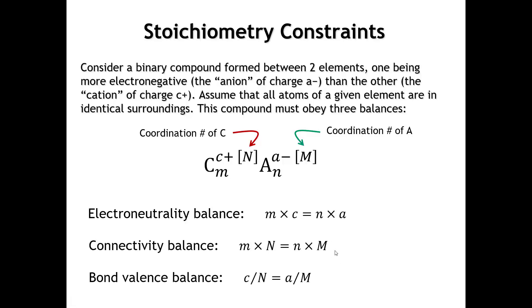The last balance to look at is what's called the bond valence balance. We'll talk about bond valences in detail in Chapter 5, but for now think about this as something like a bond order. In these inorganic compounds, we calculate the bond order by taking the oxidation number divided by the coordination number. The bonds that go to the cation are the same bonds that come from the anion, so we could alternatively calculate the bond order using the oxidation number of the anion divided by the coordination number of the anion.